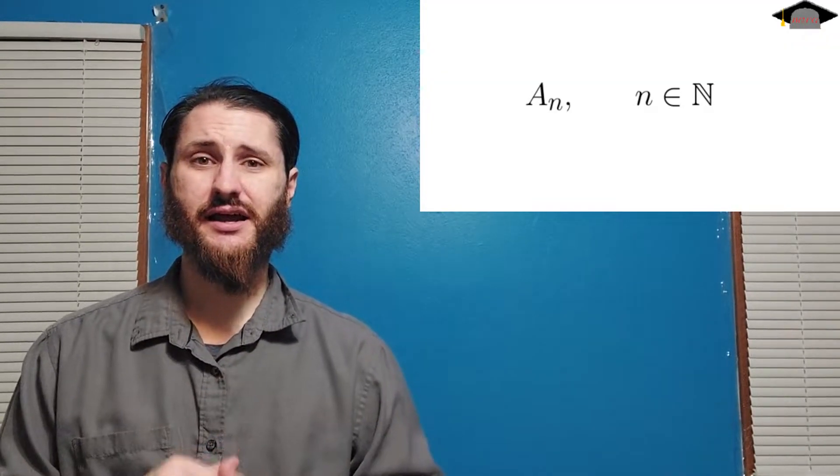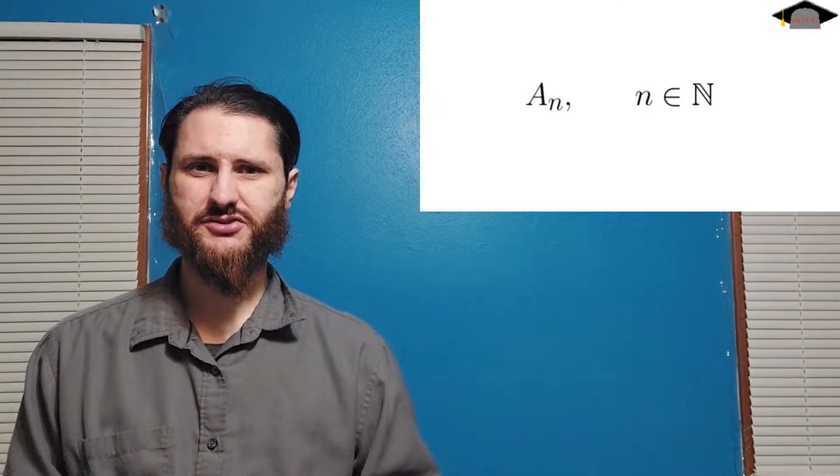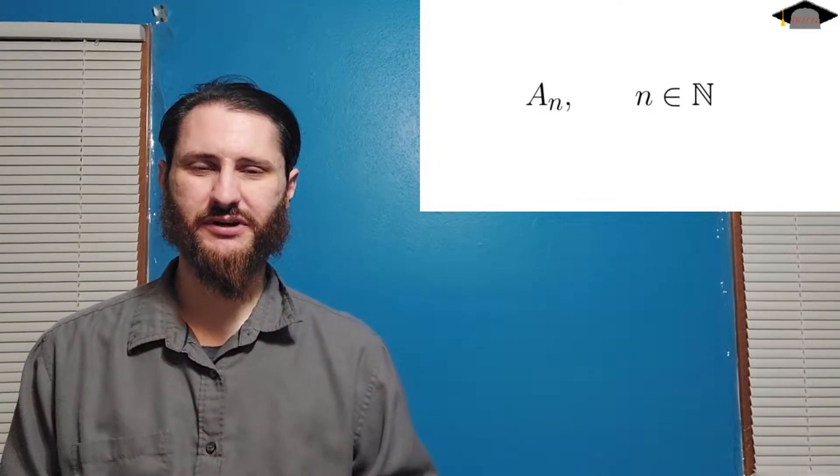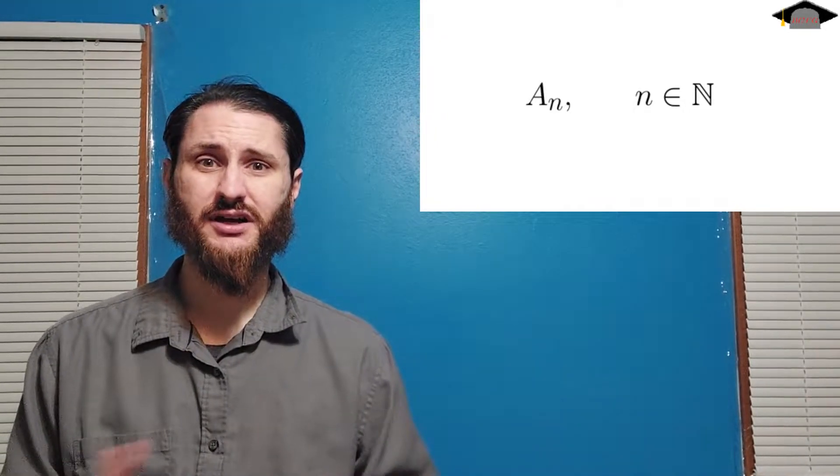We're going to start off with the definitions and constructions for direct limits, and then maybe talk about an example or two of an interesting structure created with the use of a direct limit system. For starters, we need to have a partially ordered indexing set, but for the sake of simplicity, we'll just assume our indexing set is the natural numbers. We're going to let A sub n be a group for all n. You can do this construction in just about any category with pretty much any type of mathematical structure you can think of, but again, for the sake of simplicity and concreteness, we're going to focus on groups for now.